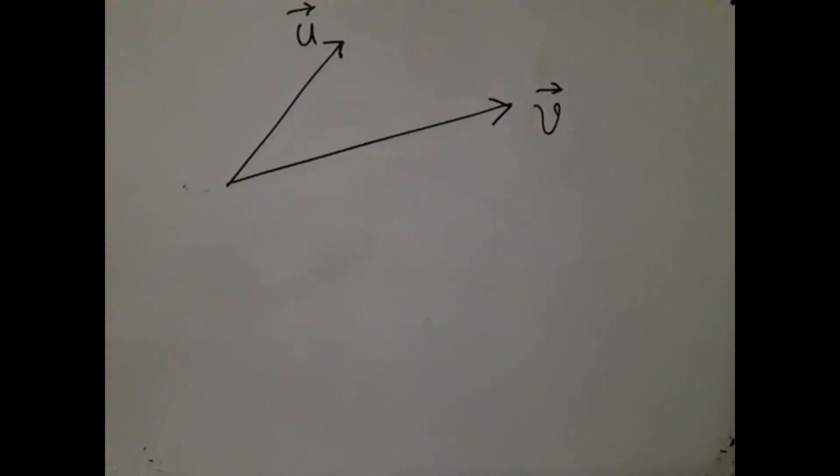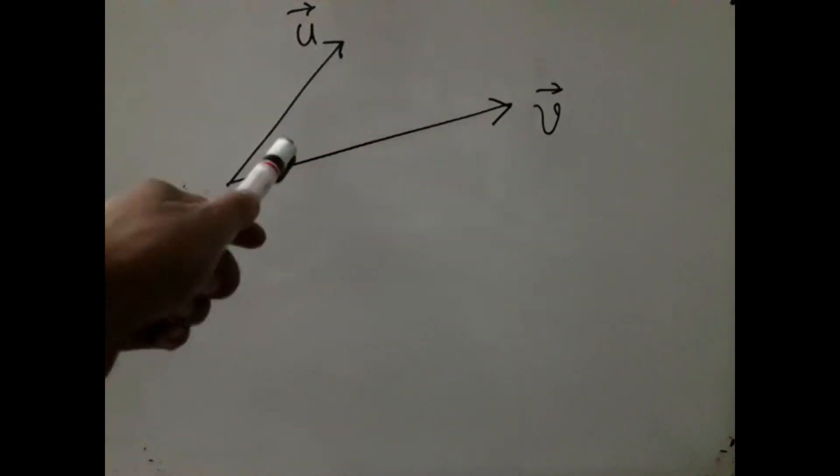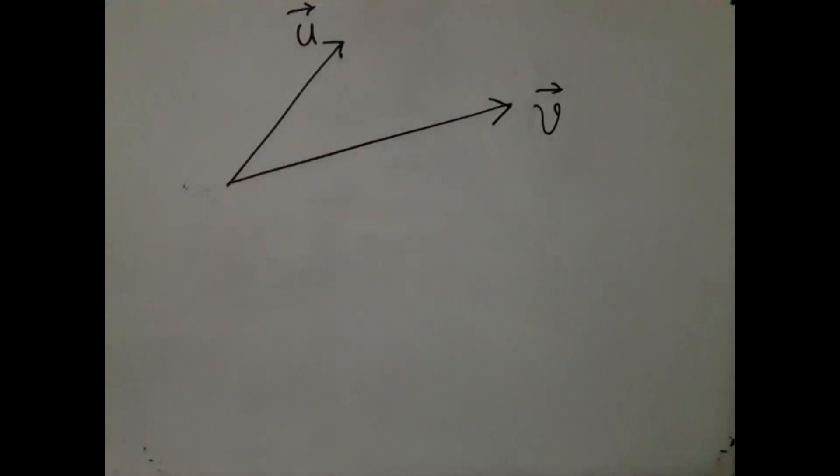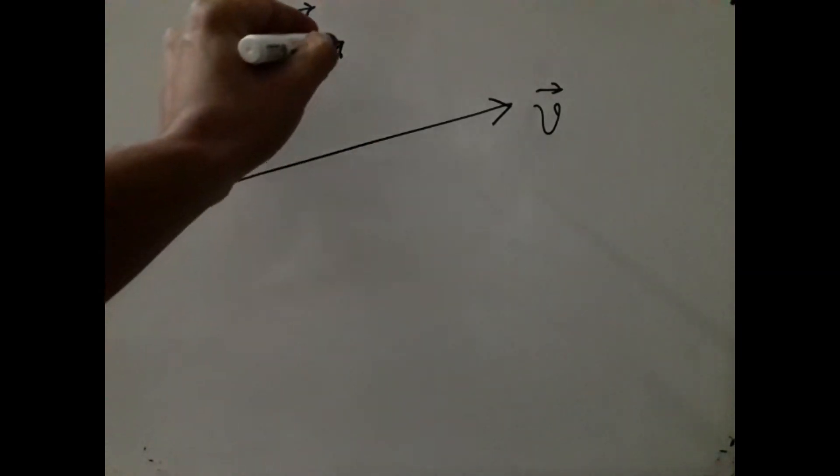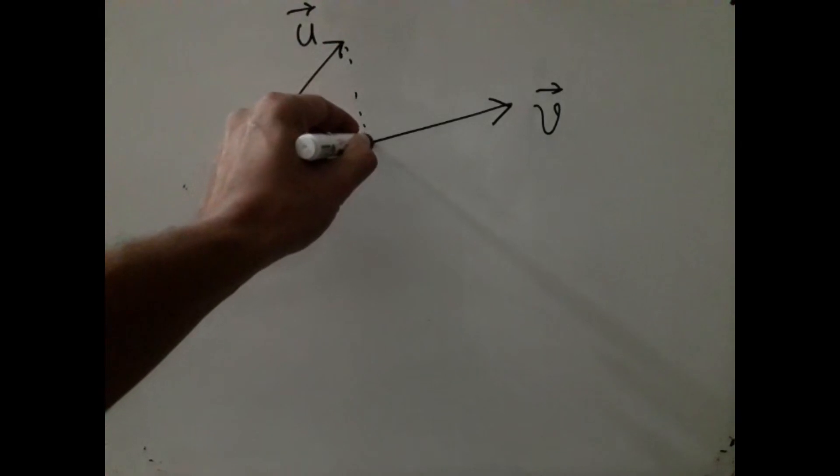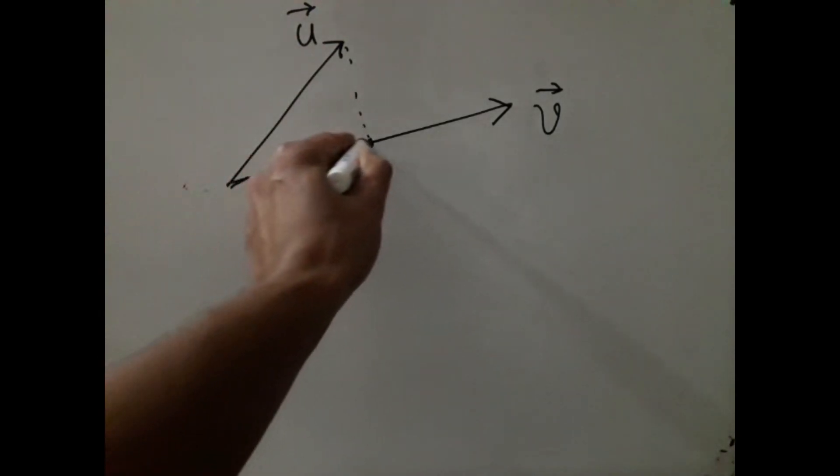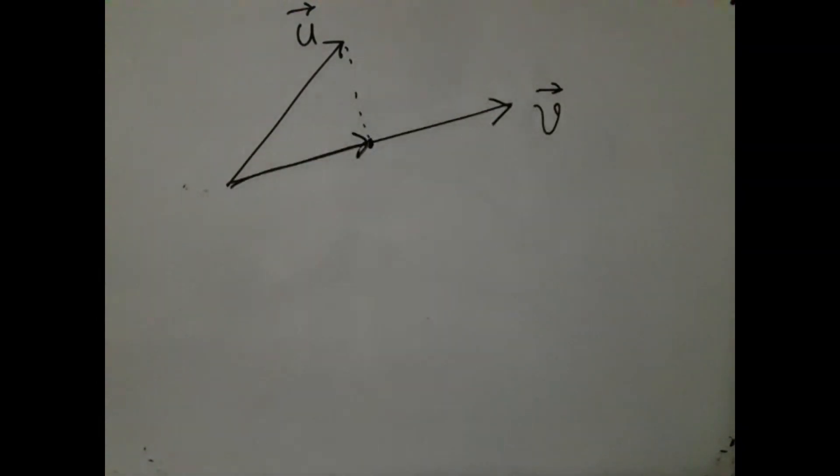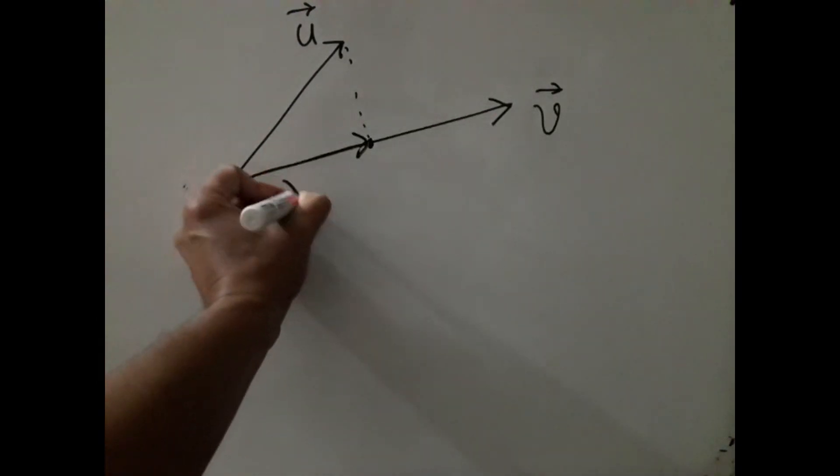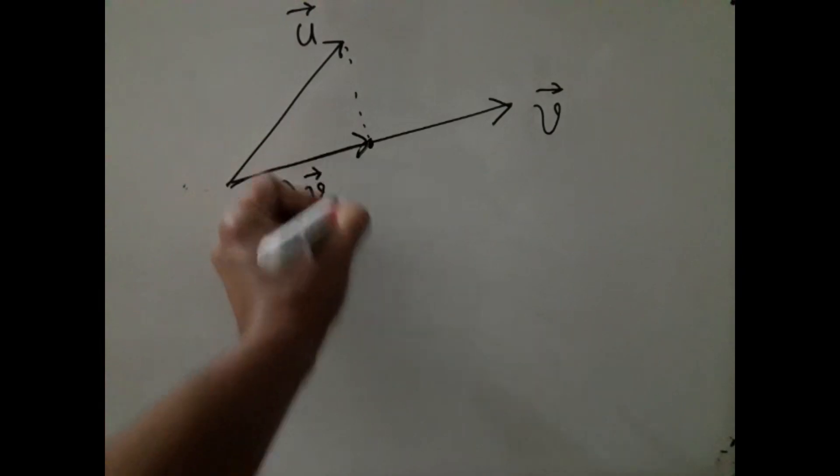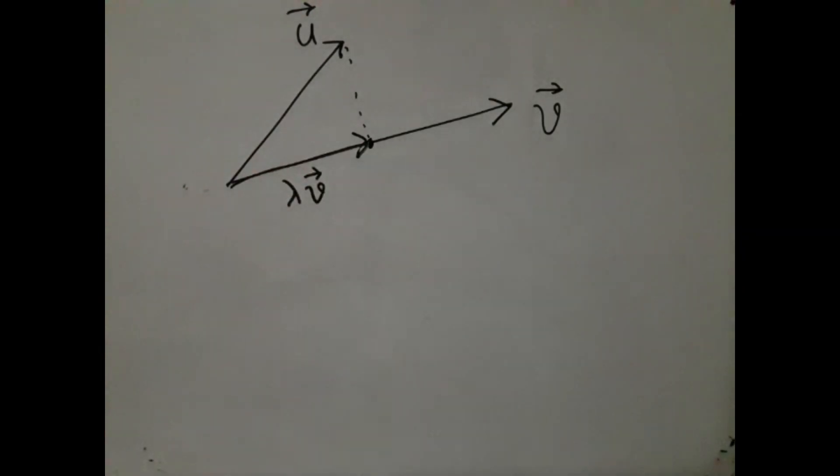We already worked with two nonzero vectors u and v and we want to define the angle between them. What we do is that we first try to find the foot of this perpendicular. Now this vector lies along v, so this vector must be of the form λv for some scalar λ.